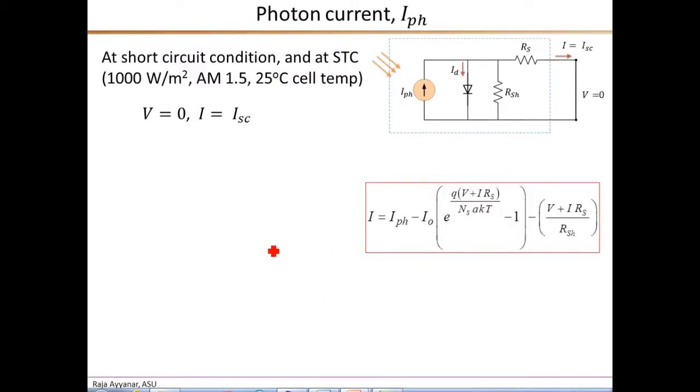So the first parameter that we will learn to estimate is the photon current I-ph. Now for this, we look at the short-circuited condition. So at short circuit, obviously the terminal voltage is 0, V equals 0. And by definition, the external current I is the short-circuit current ISC. Now the value of ISC is given in the datasheet, but only at the STC, the standard test conditions. Therefore, the photon current that we obtained from the equation that we are going to develop would correspond only to the STC condition. And for other values of irradiance and temperature, we need to scale it suitably. And that is something that we will see in the next slide.